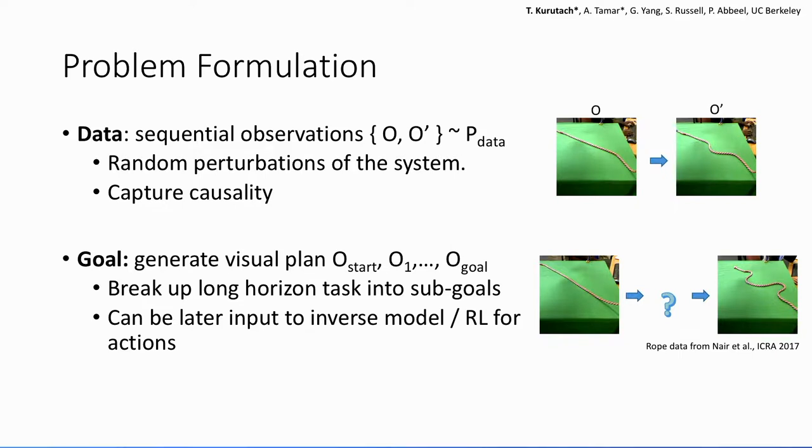So our goal here is to imagine a goal-directed sequence of images from a start image to the goal image in a plausible way. By plausible here, we mean that the transitions respect the causality in the system.